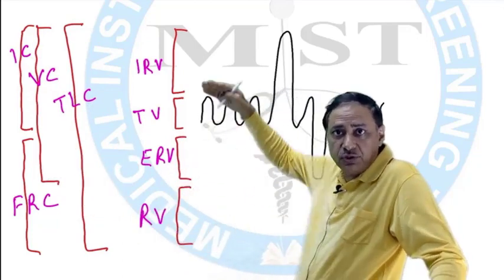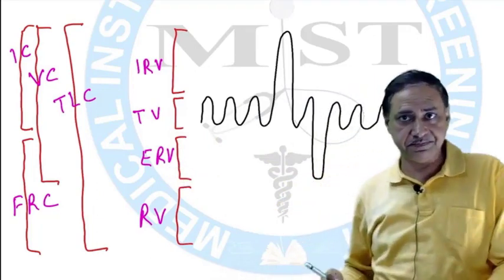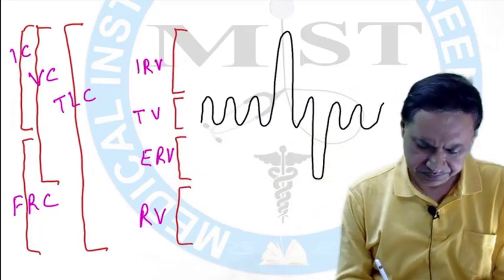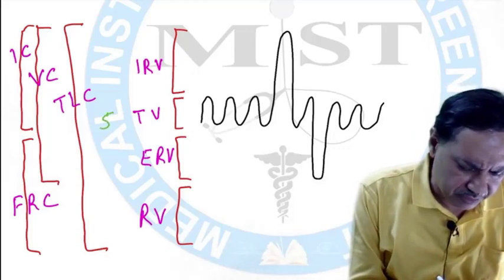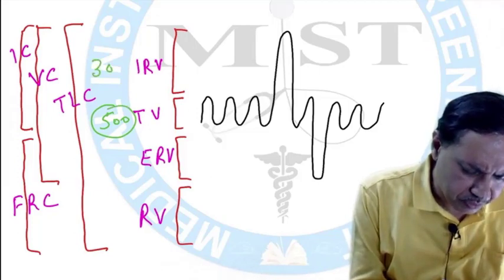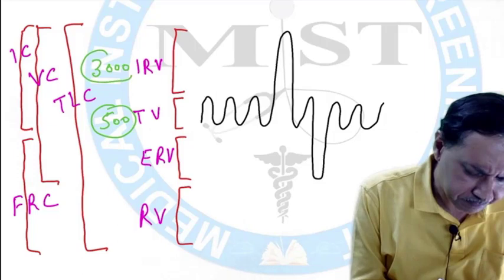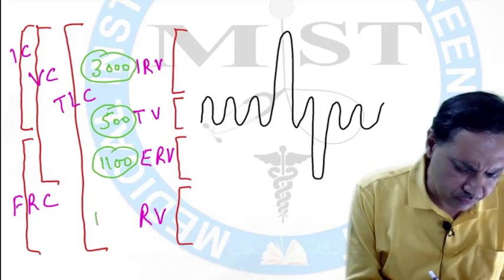Volume is an individual volume, and Capacity is a permutation and combination. Values: Tidal Volume — 500 mL. Inspiratory Reserve Volume — 3000 mL. Expiratory Reserve Volume — 1100 mL. Residual Volume — 1200 mL.